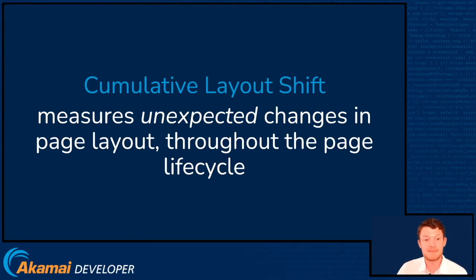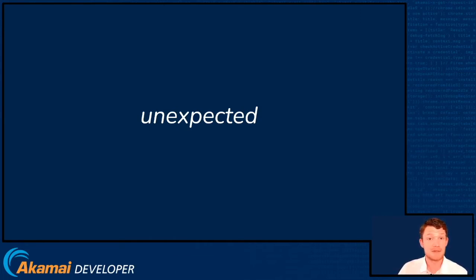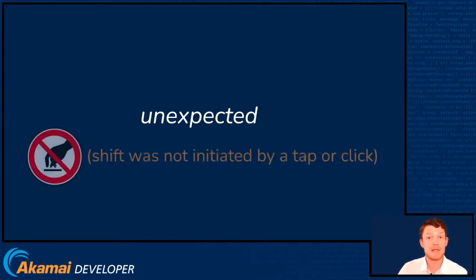CLS measures unexpected changes in page layout throughout the lifecycle. Let's talk about what 'unexpected' means. If you had a hamburger menu on your page, when a user taps the icon for the menu, they expect something to change, so if there is a layout shift at that point it's not a major issue. An unexpected layout shift is defined as one that does not have a click, a tap, or a keyboard press immediately preceding it by half a second.